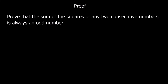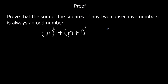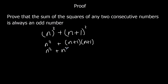Prove that the sum of the squares of 2 consecutive numbers is always odd. So 2 consecutive numbers: the first one is just n, and the next one is n plus 1 — so this is a number and this is 1 more than it, making them consecutive. It's the sum of the squares, so it's n squared plus (n+1) squared. We expand to get n squared plus n squared plus n plus n plus 1, giving 2n squared plus 2n plus 1.